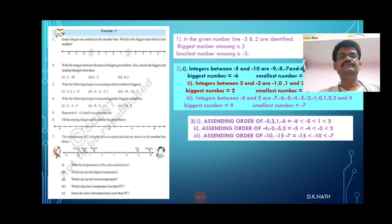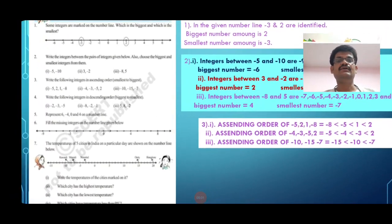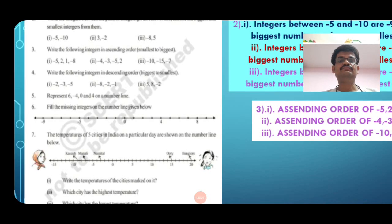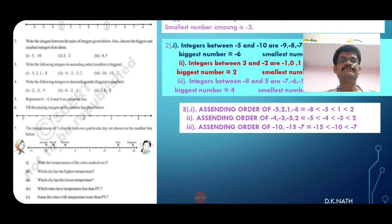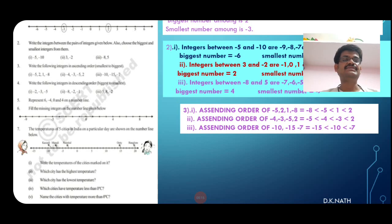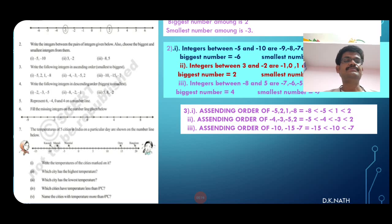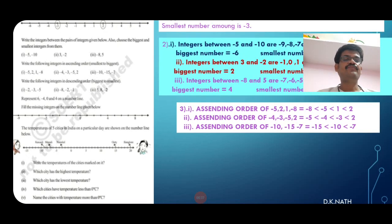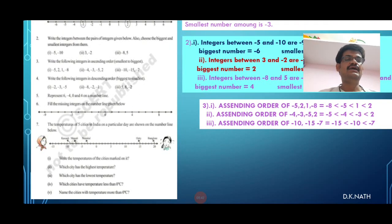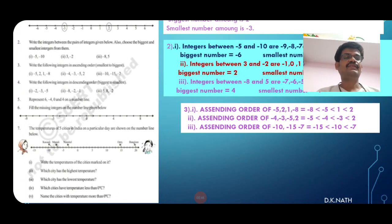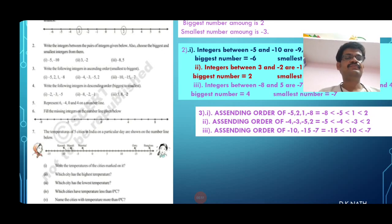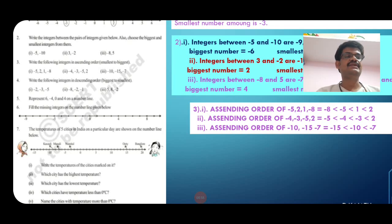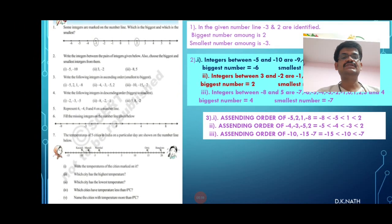Next, third question: write in ascending order. First, the given numbers are minus 5, 2, 1, and minus 8. The ascending order is: minus 8 < minus 5 < minus 1 < 2. Second problem: the given numbers are minus 3, minus 4, 5, and 2. The ascending order is: minus 5 < minus 4 < minus 3 < 2. The same way you can do the third problem also.